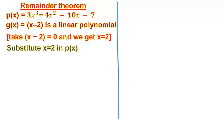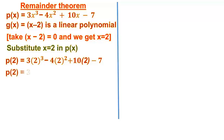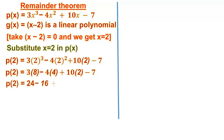Substitute x equals 2 in P of x. Then P of 2 equals 3 into 2 cubed minus 4 into 2 squared plus 10 into 2 minus 7. P of 2 equals 3 into 8 minus 4 into 4 plus 10 into 2 minus 7. Therefore, the remainder P of 2 equals 21.